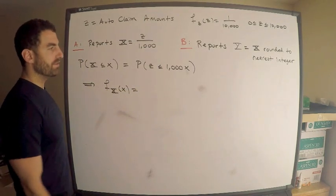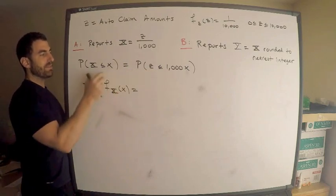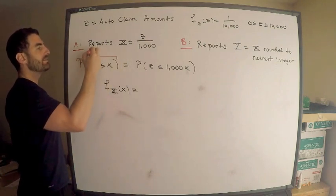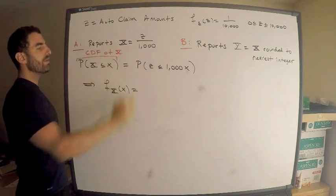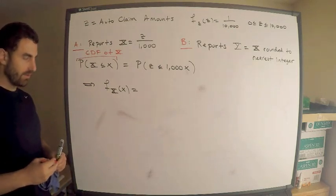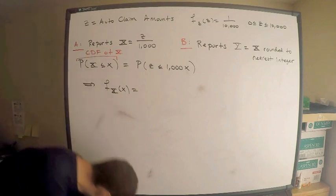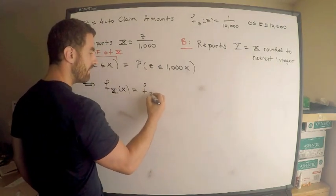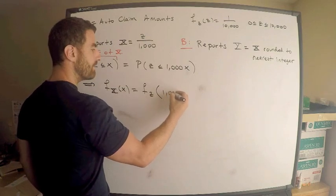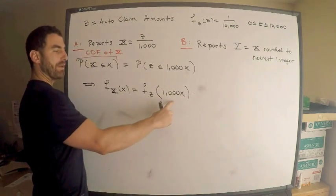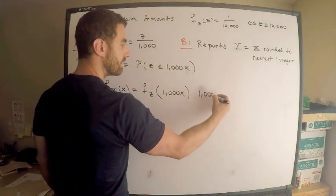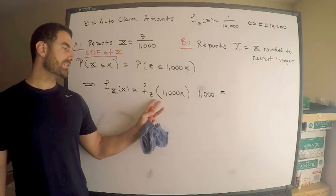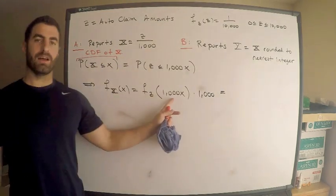This is the CDF of Z, but it's also the CDF of X. To get the PDF of X from the CDF, I take the derivative. So differentiating: this is the CDF of Z evaluated at 1,000x, which gives f of Z at 1,000x times the derivative of 1,000x — using the chain rule — so times 1,000.